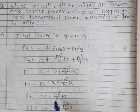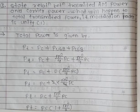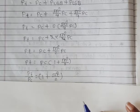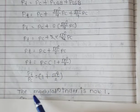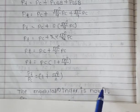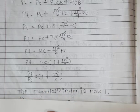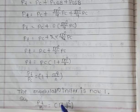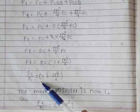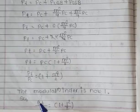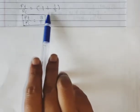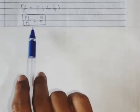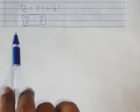Taking PC common, we get PT equals PC times (1 plus m squared by 2). Rearranging, PT divided by PC equals 1 plus m squared by 2. Now substituting m equals 1 (modulation index is unity): PT by PC equals 1 plus 1 squared by 2, which gives 1 plus 1 by 2, equals 3 by 2. So the answer is PT by PC equals 3/2.